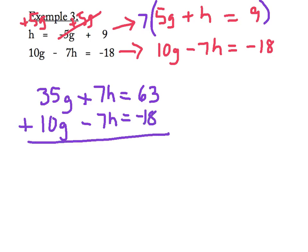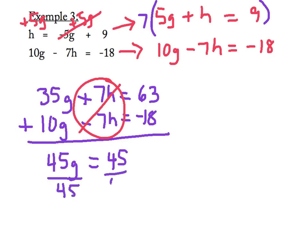Now I'm going to add my columns. Keep in mind that my 7H and negative 7H are opposites, which will cancel each other out. When I add my other columns, I get 45G is equal to 45. Dividing both sides by 45 is my last step here, and I will get G equals 1.